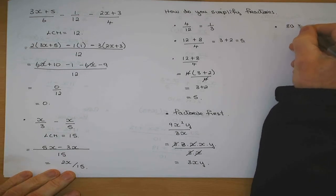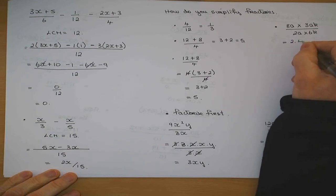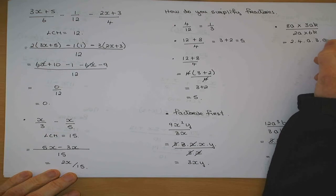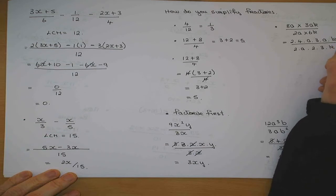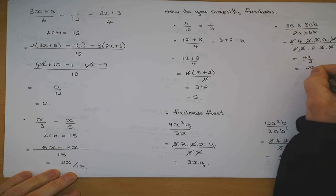8a multiplied by 3ak all over 2a times 6k. I'd write that as 2 by 4 by a by 3 by a by k. What have I done to the top? I factorized it out fully. And this 2a, 2 by a by 2 by 3 by k. The a's are gone, that 2 is gone, that 3 is gone, 2 will go into 4. I'm left with 4a over 2. What I have there? 4a over 2, 2a.